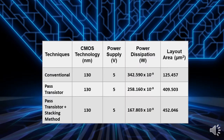You can see that with the same CMOS technology of 130 nanometer and the same power supply of 5V for all designs, the decreasing of power dissipation is a huge figure. From the conventional technique at 342.590 nanowatt, to the pass transistor technique at 258.160 nanowatt, and to the combined technique of pass transistor and stacking method at 167.083 nanowatt.